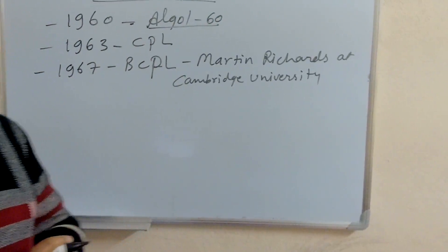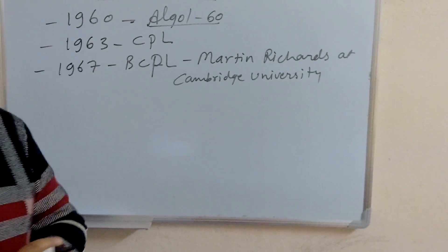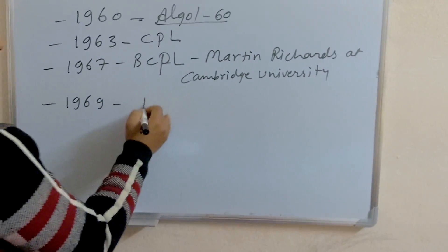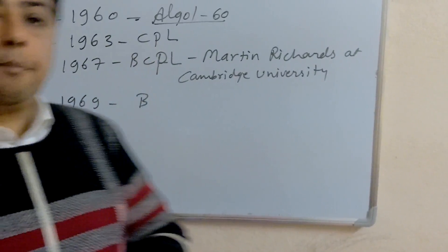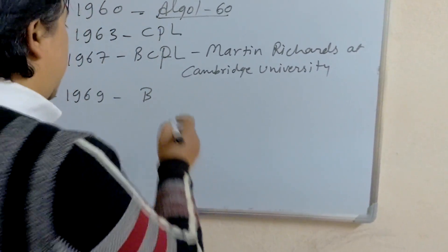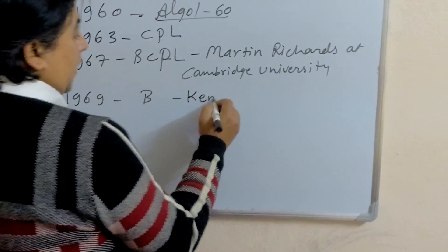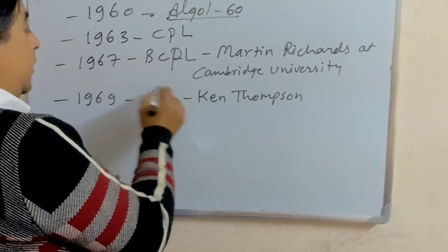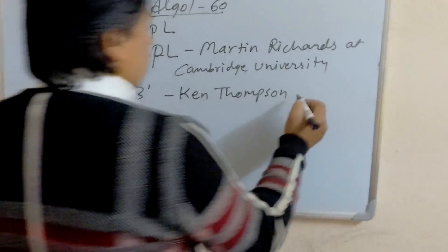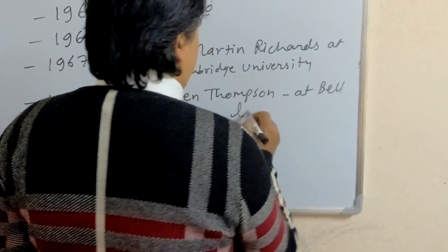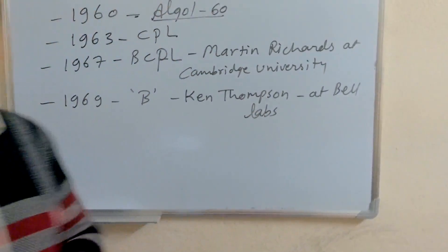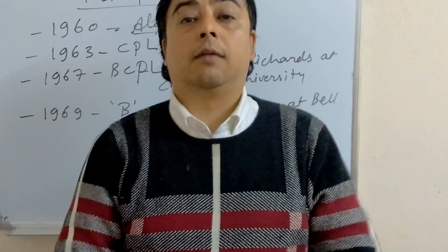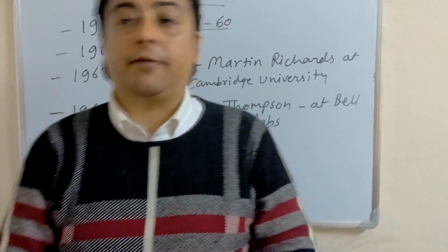That's why, in 1969, inheriting some features of CPL and BCPL, Ken Thompson developed B Programming Language at Bell Labs. It was also less powerful as well as only solved specific problems.